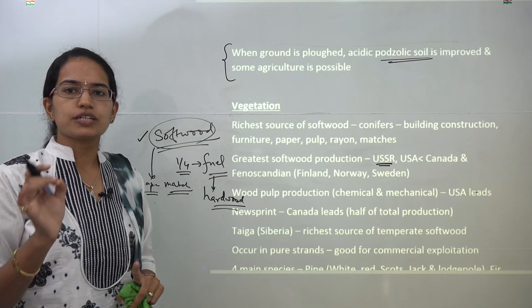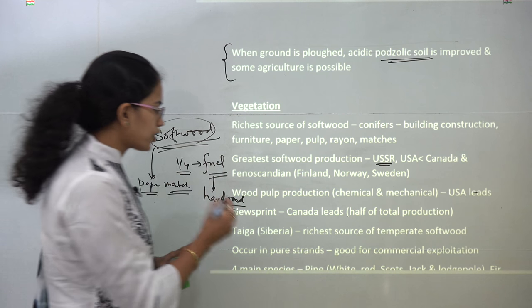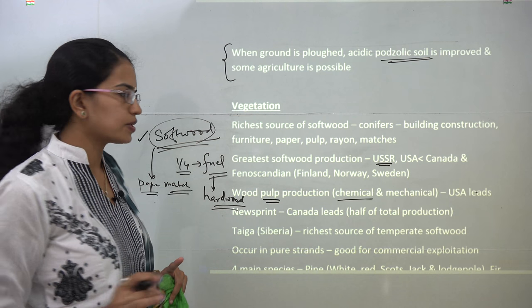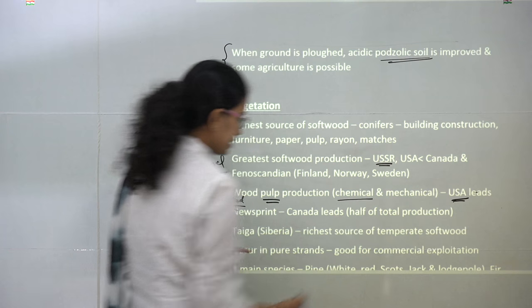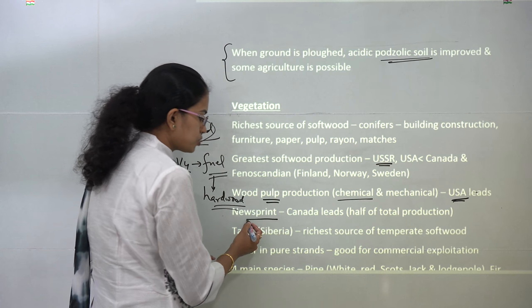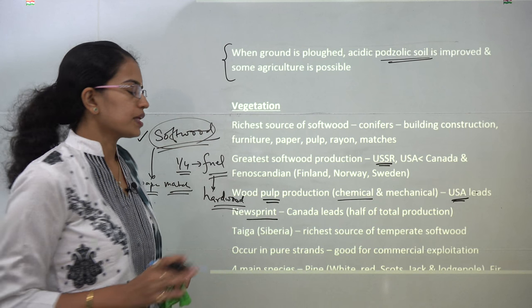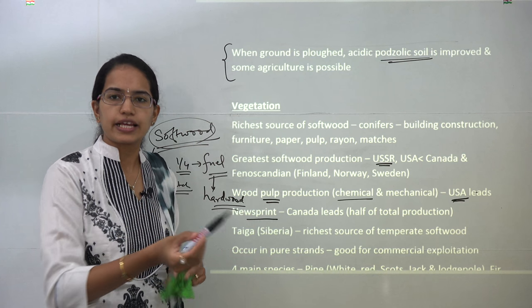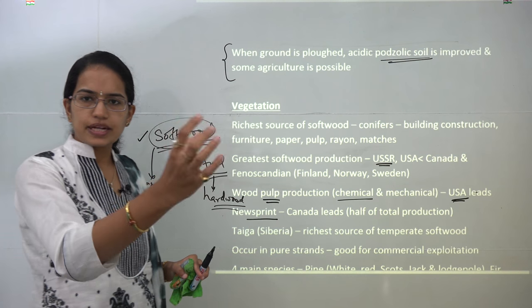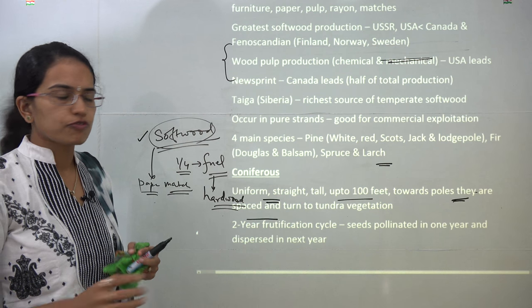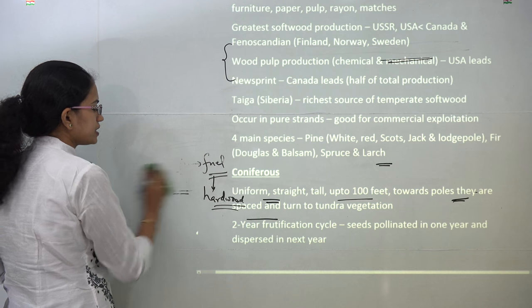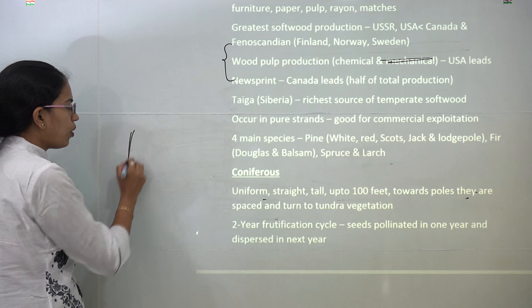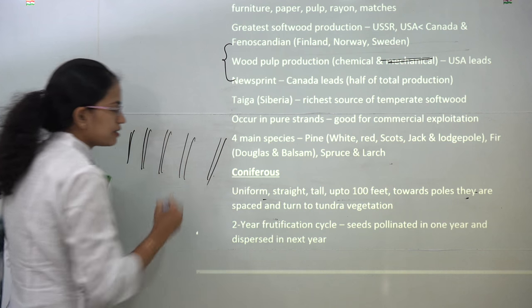There is a difference between pulp production and paper production. Wood pulp can be obtained through mechanical or chemical processes — in either case, America leads in pulp production. However, when it comes to newsprint or paper production, Canada leads. The Siberian belt, known as the taiga belt, is the biggest source of temperate softwood. An interesting feature is that softwoods occur in homogeneous strands — meaning trees of the same type grow together — which makes their commercial exploitation very easy.